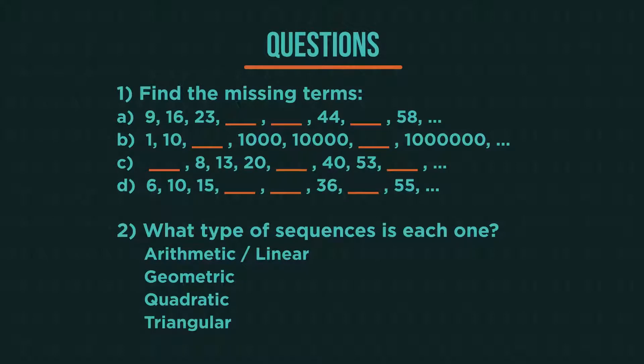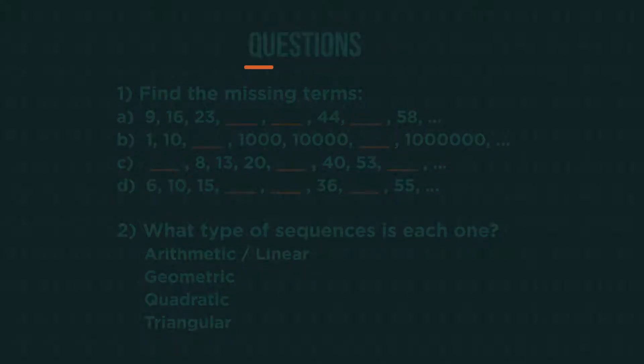Here are some sequences. Find the missing terms of each sequence and then label what type of sequence it is. Pause the video, answer the questions and click play when you're ready. How did you get on?